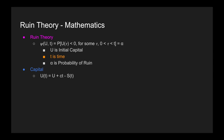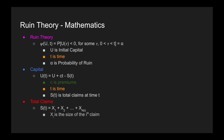Our capital fluctuates with time and equals U, the initial capital, increased by CT, which represents premiums — C is the premium rate multiplied by time T. Then S(T) is the total claims at time T. Total claims are given by a compound distribution: the sum of all X_i, where X_i is the size of the i-th claim. The number of claims is also random — we don't know how many claims will occur over a given time period, but we model it with a distribution. N(T) is the number of claims at time T.